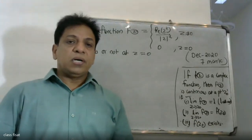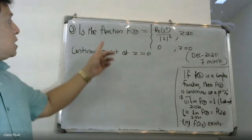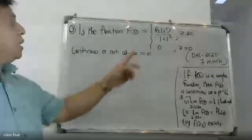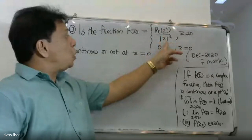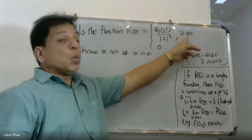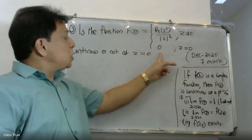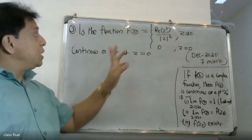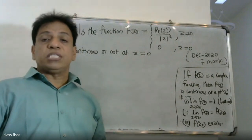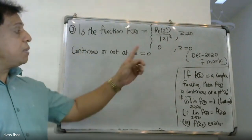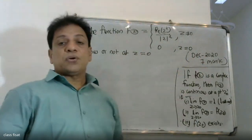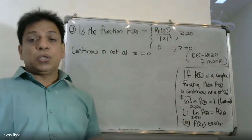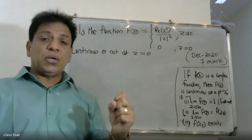Good morning students. Today's question is: the function f of z is equal to the real part of z squared divided by modulus of z squared, when z is not equal to zero, and f(0) equals zero. We need to check whether this function is continuous or not — check if it is continuous on all of the complex plane.